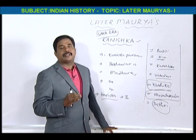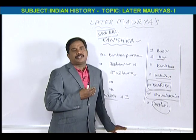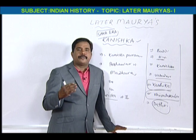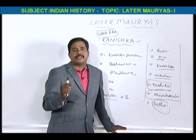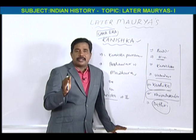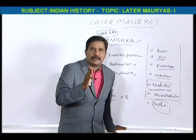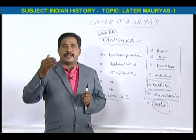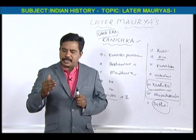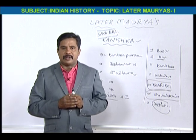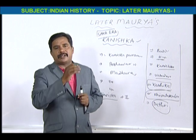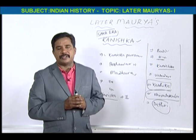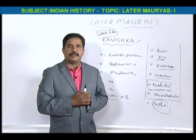Among all the foreign dynasties, the most important dynasty was the Kushans, and the most important, strongest, and greatest ruler was Kanishka. The Kushans came from South China and Central Asia but joined the Indian union. After the decline of the Kushans, we have the Gupta dynasty. In the next class, we will discuss the Gupta dynasty.